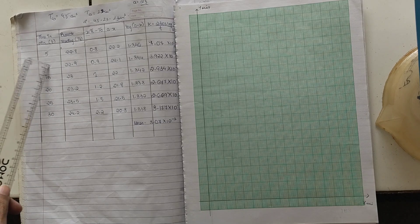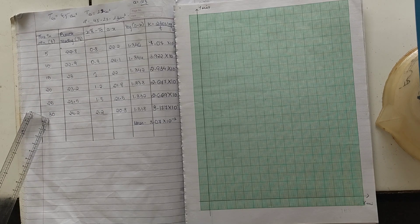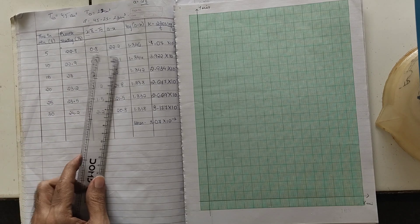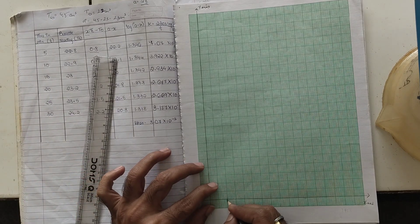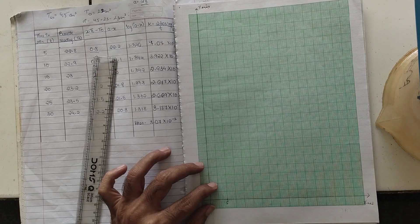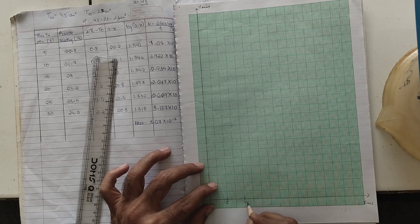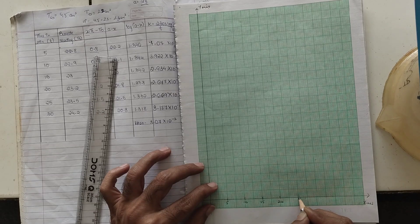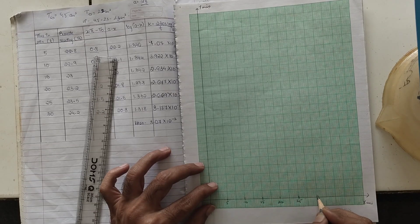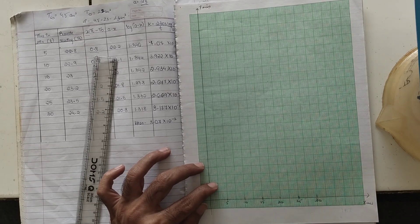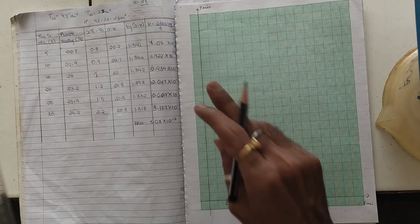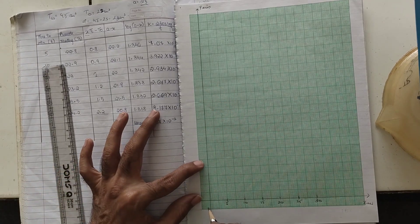We have taken readings at the intervals of 5 minutes, going up to 30 minutes. So we will be taking two squares as five minutes - this will be 10, this will be 15, this will be 20, this will be 25, and this will go for 30. This way you can select the squares. Next thing is we go for X-axis. Here we have started with zero.